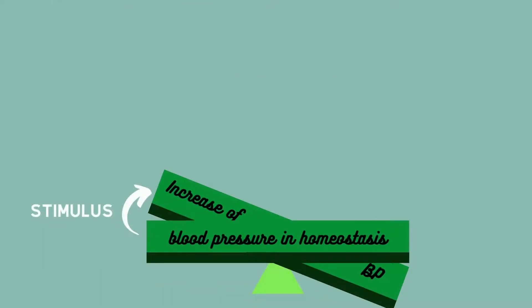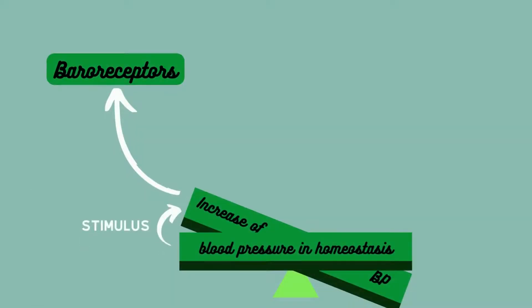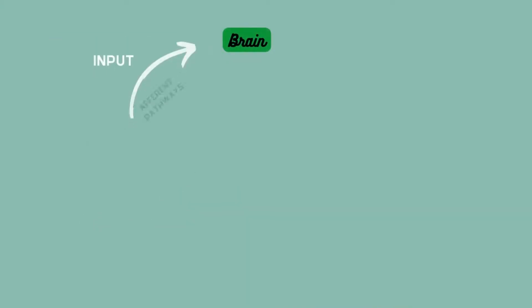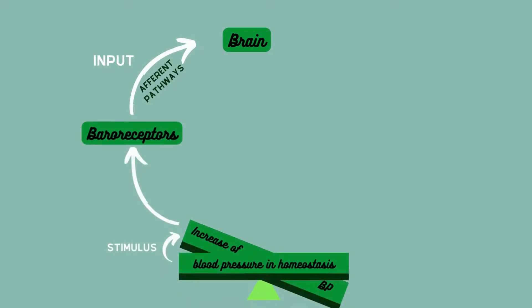First, an internal or external stimulus will cause an increase in blood pressure. This change is detected by the baroreceptors, which are pressure sensitive receptors. These receptors send an input via afferent pathways to a control system. They send nerve impulses to the brain in order to interpret them.